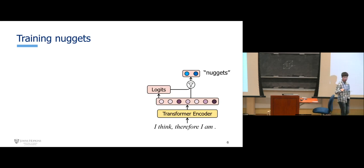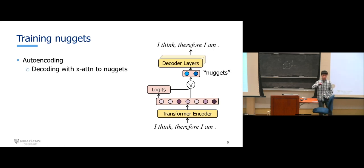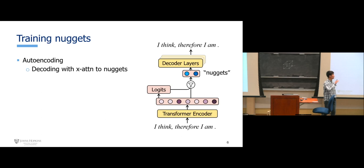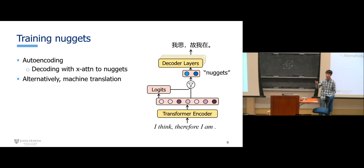How do we train a Nugget encoder? Nugget encodes the passage, so it can also decode the passage. We stack a transformer decoder atop the transformer Nugget encoder and use cross-attention to let the decoder attend to the Nugget vectors. The whole architecture is an autoencoder and can be trained unsupervisedly. We can also switch the training objective from autoencoding to machine translation by switching the output from English to another language, such as Chinese.